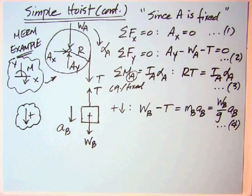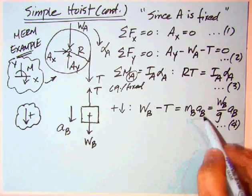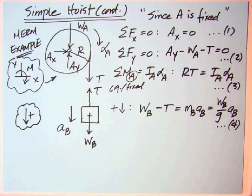We've got the equations of motion. WB's down minus T equals MA, MB, A sub B. We've given the weight of the block in the U.S. system, so that's WB over G times the acceleration of B. That's equation number four.